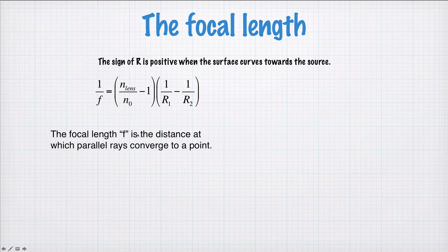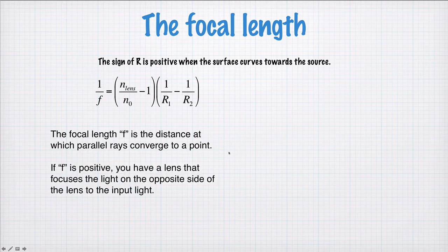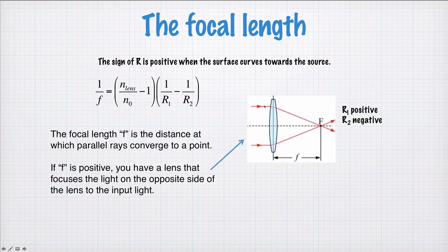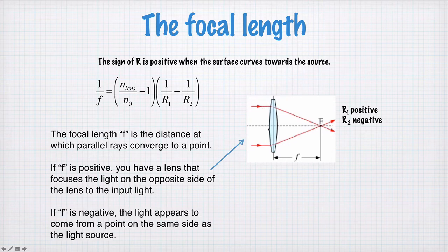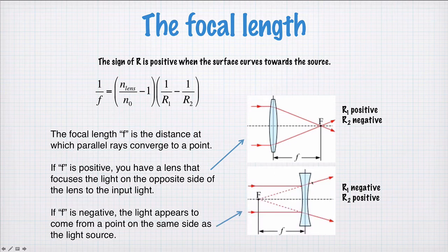The focal length f is the distance at which the parallel rays converge to a point. The situation we looked at previously is that we have f positive. In this case, light coming in parallel here gets focused at distance f at this focal point here.